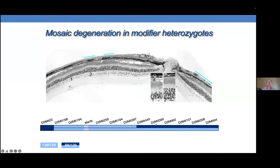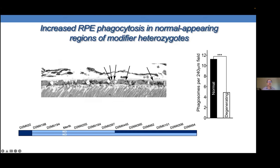We looked at animals where we could quantify phagosomes within the normal regions and degenerating regions in the same sections. This work was done by Doug Yasumura in Matt's lab. We clearly saw that the normal regions had a significantly increased frequency of phagosomes, suggesting that the suppressor was in fact addressing the root cause of the degeneration in these MERTK knockout animals.